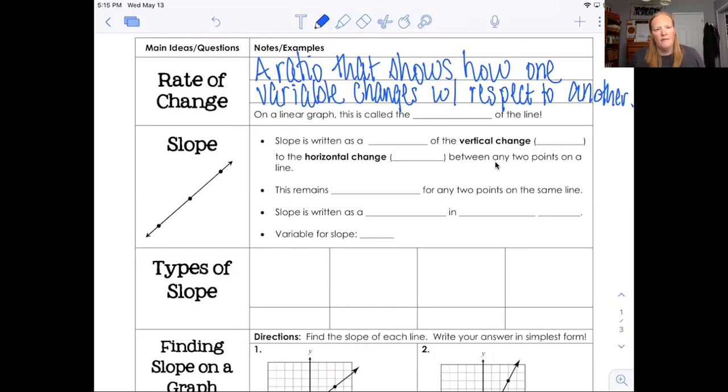In business situations, it could be money over time, or it could be the temperature over the course of the month, it could be the miles traveled per hour, things like that. For a linear equation, it's just going to be how are x and y changing, because those are the two variables that we're going to look at. On a graph, it's called the slope of the line. The slope is written as a fraction or a ratio. A lot of times a ratio is written as a fraction, so I'm going to use the word fraction.